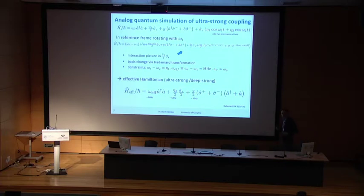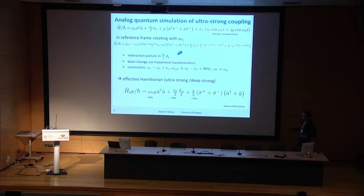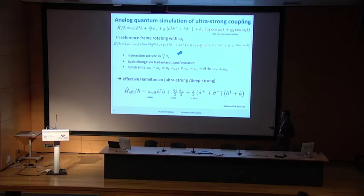Most importantly, you consider constraints on the applied frequencies and amplitudes. One constraint is that the difference between both applied drive frequencies must match the amplitude of the first drive. There's also a new effective transition frequency for the harmonic oscillator, ω_eff, which is the difference between the original transition frequency and the drive frequency.